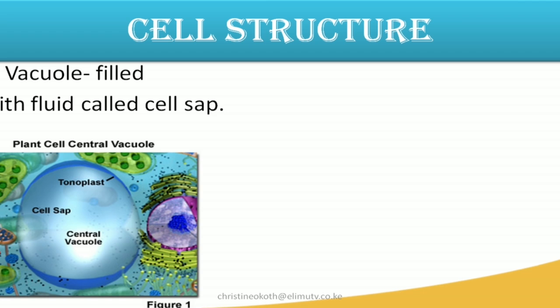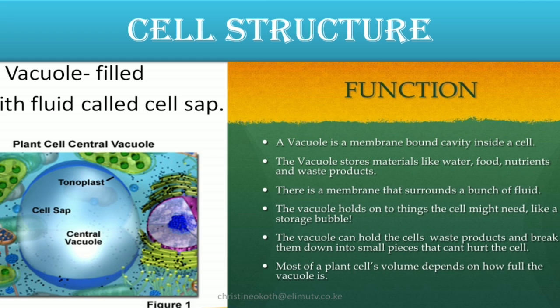Another structure found in both cells but very visible and larger in the plant cell is what we call a vacuole. It is filled with fluid which we call the cell sap. You can look at the structure of the vacuole there in the figure. The function of the vacuole is just like a storage pack — it stores materials such as water, food, nutrients, and waste products.